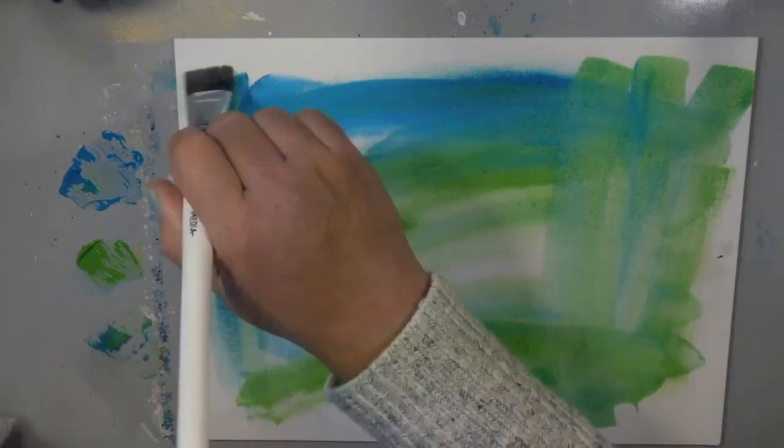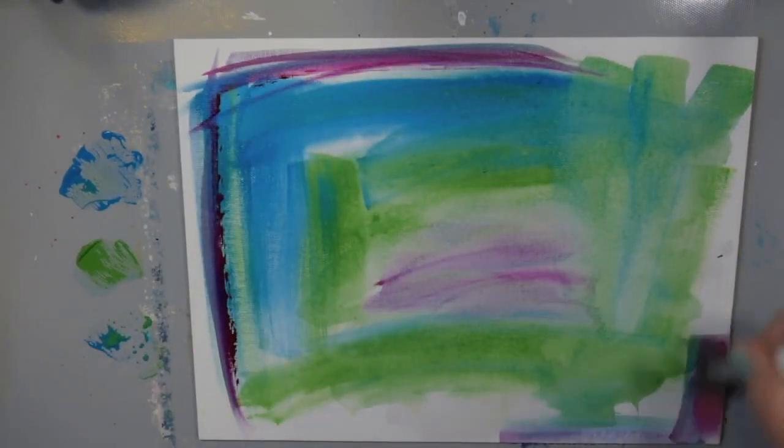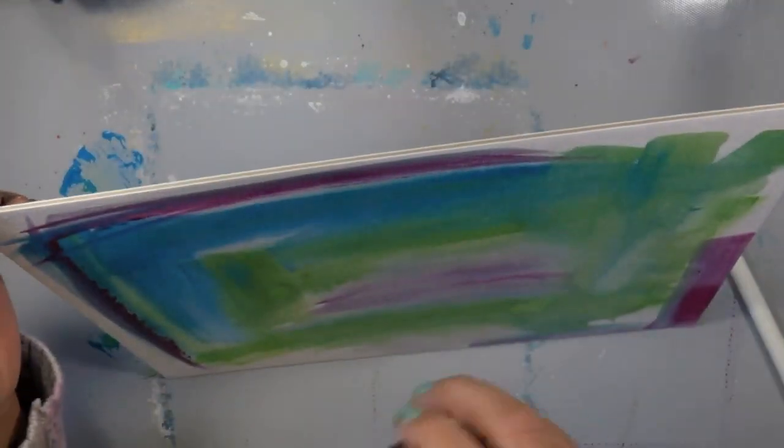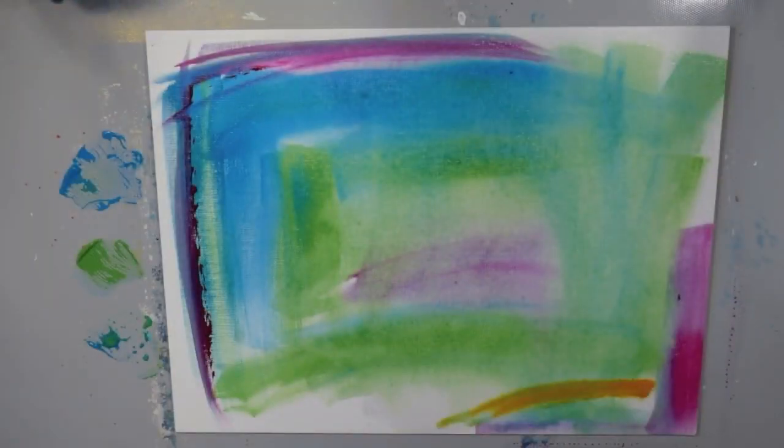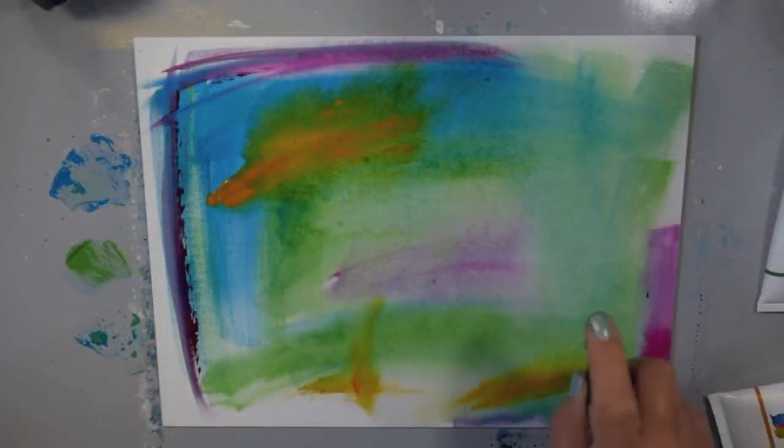You can see I started by a technique that I saw Dina do which is I wet my canvas first and then I started applying the paint. And what that did was it created kind of a wash right on my surface.